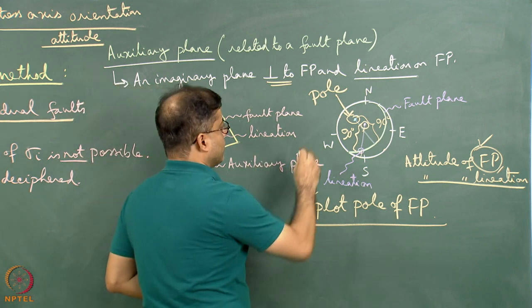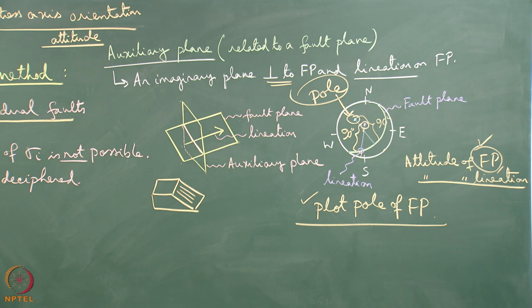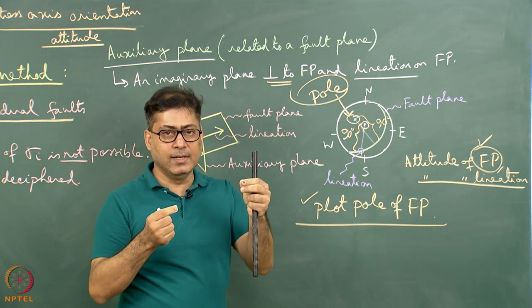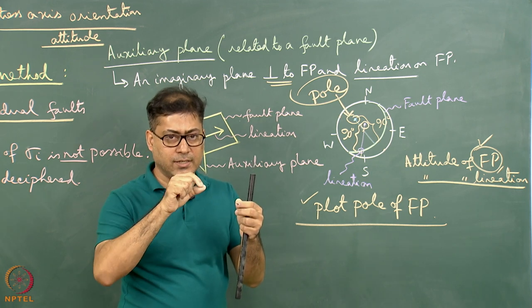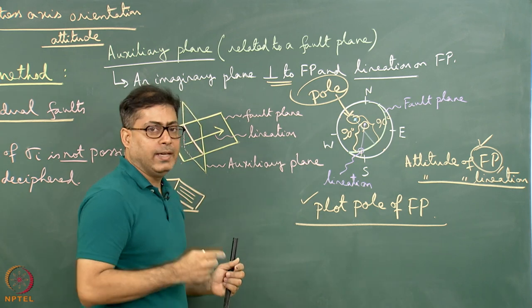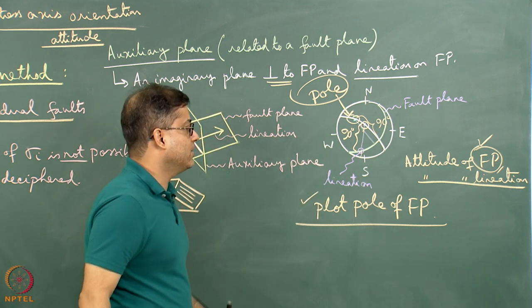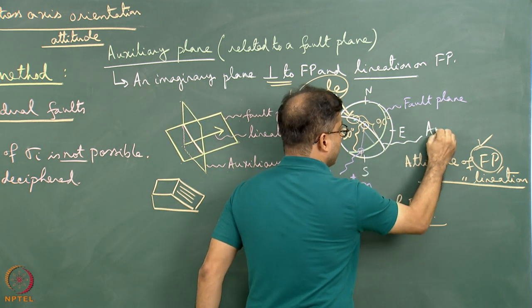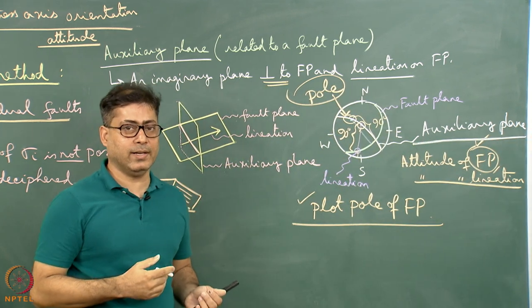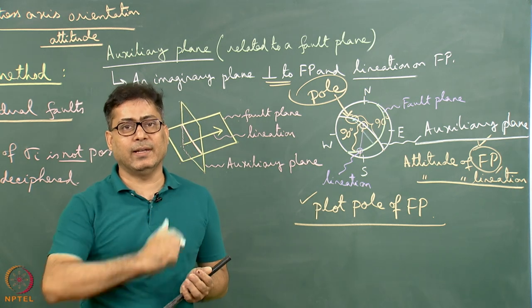Now we have two plotted points: the pole of the fault plane, and the point 90 degrees from the lineation. Rotating the tracing sheet to find the unique position where a great circle passes through both points gives us the auxiliary plane great circle. This great circle represents the auxiliary plane. With the auxiliary plane plotted, we can now constrain the locus of the principal stress axis for a single fault plane.